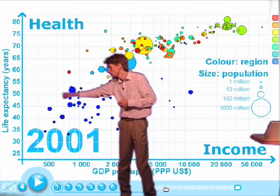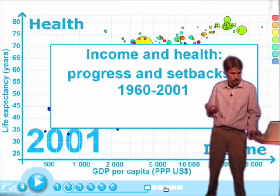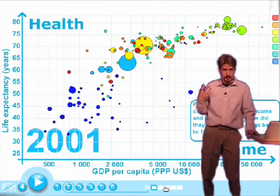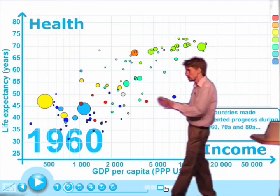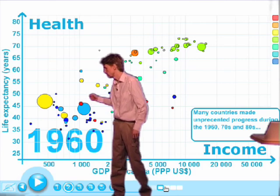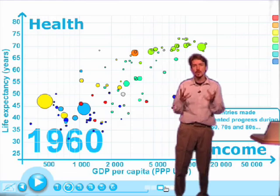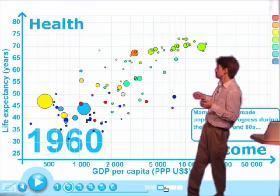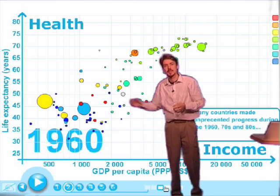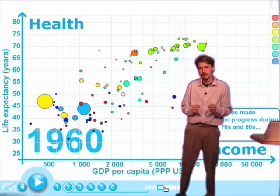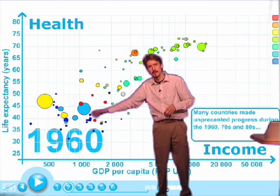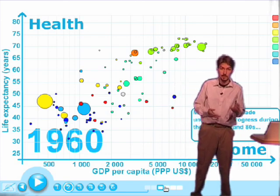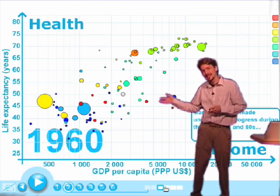Has it always been like this? No. That poor corner with only Sub-Saharan Africa today was totally different 40 to 45 years ago. Going back to the 1960s, that corner contained East Asia, South Asia, India, China, Arab states, and Latin America. Back then we could actually speak about developed and developing countries — the first, second, and third world. In 1960 it made sense because there was a huge difference between a small rich group and a large poor group. But that world does not exist today, so we can no longer use those terms.